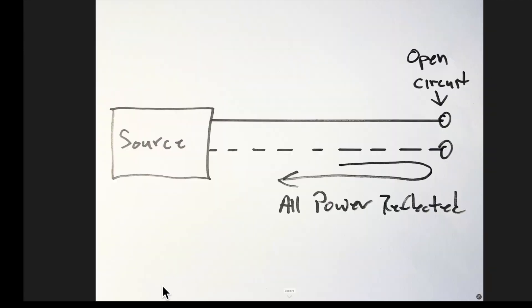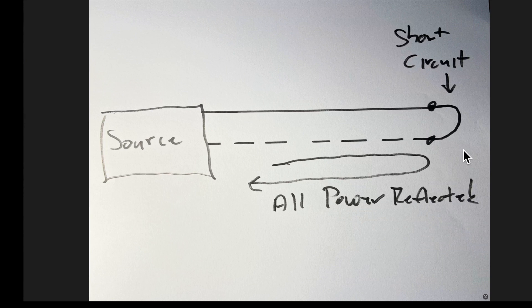What if instead of a 50-ohm load, it's an open circuit? Since that is not an acceptable load, all power is reflected back to the source, and the reflected current gets a 180-degree phase shift. What if instead of an open circuit, there's a short circuit? Same thing — all the power is reflected back to the source, but this time the reflected voltage gets a 180-degree phase shift.